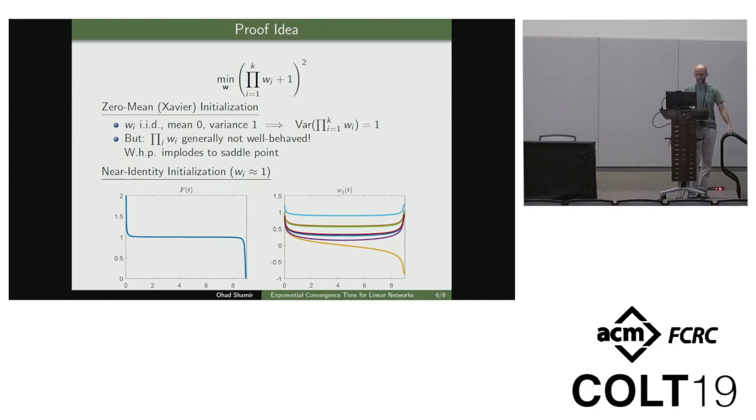But people have also studied other types of initializations for these networks. So for example, near identity, where you initialize each WI to be close to one. This is motivated by residual networks. I won't go into the details. And here also gradient descent fails, but for a somewhat different reason. And to explain the intuition, maybe it's best just to see a run of gradient descent on a particular example. So here is when you pick k equals seven, a depth seven network. The left plot shows the evolution of the objective function. So it very quickly decreases to one, then stalls.